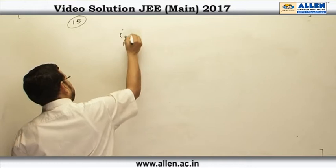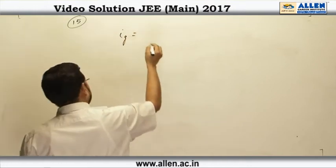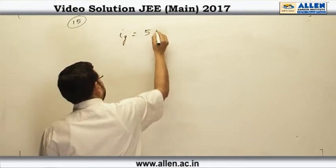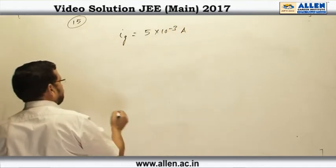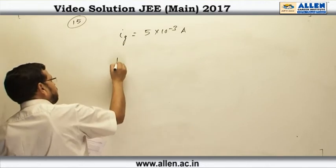So, I know that the full scale deflection current given out to be 5 milliampere that is 5 into 10 raise to power minus 3 ampere. Now, the range of the voltmeter is 10 volt. So, that means,